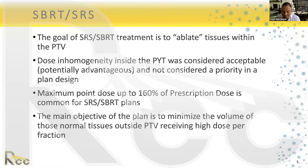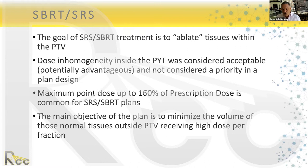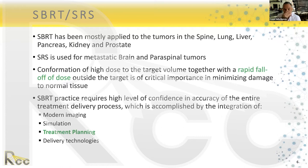The goals of SBRT are basically to ablate tissues within the PTV — that's why we use very high doses. Dose inhomogeneity inside the PTV is considered acceptable and potentially advantageous, not a priority in plan design. Hotspots or maximum doses can go up to 160% of the prescription dose. The main objective is to minimize dose to the organs at risk and normal tissue around the PTV.